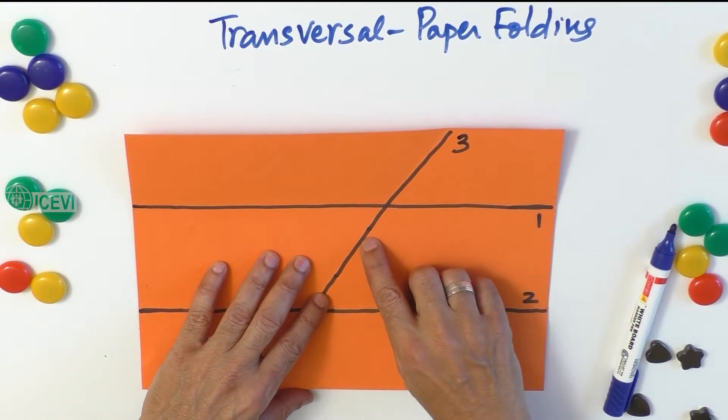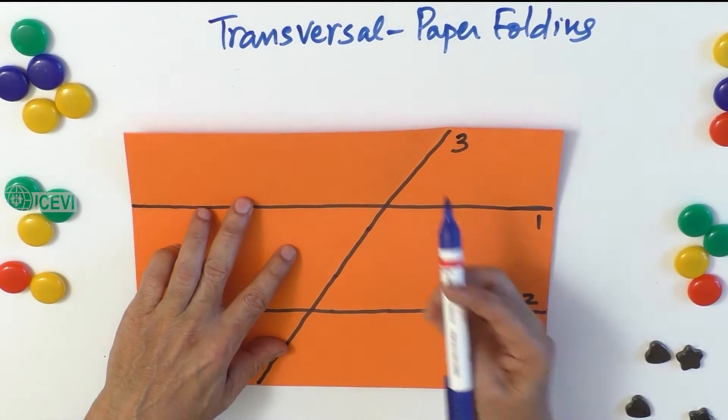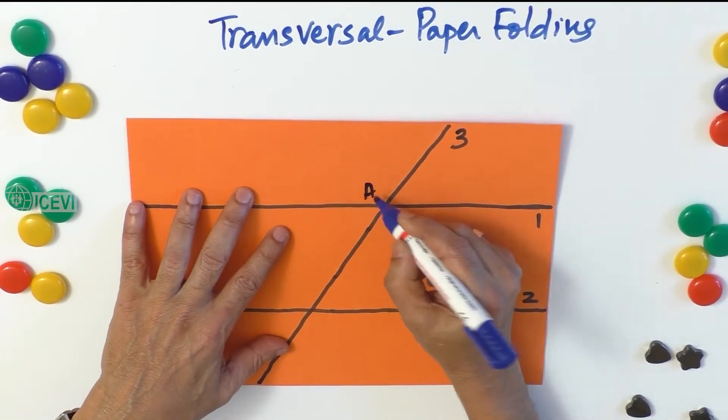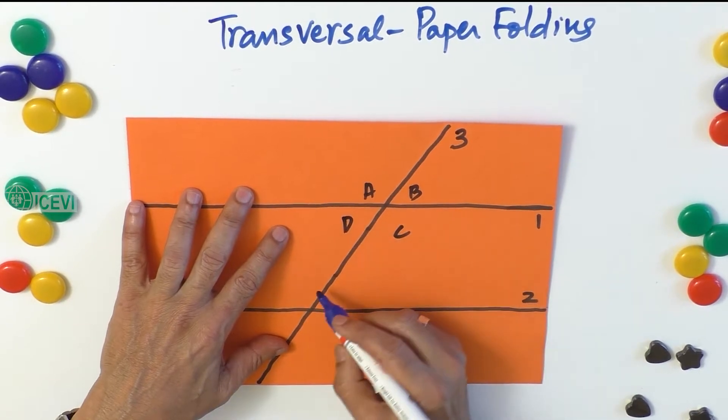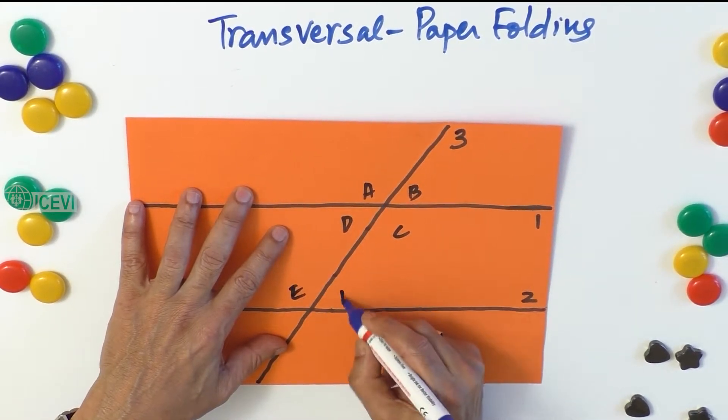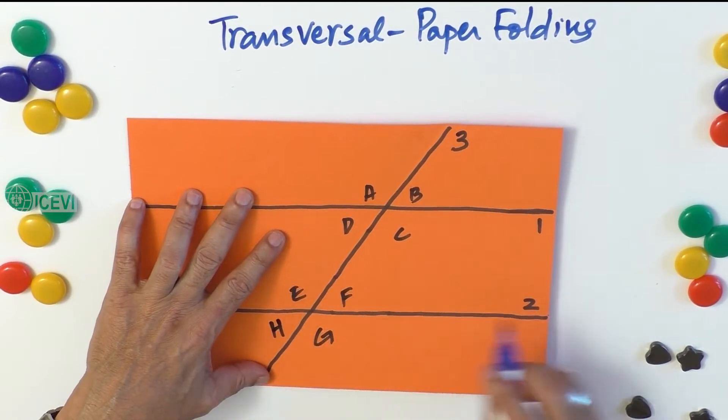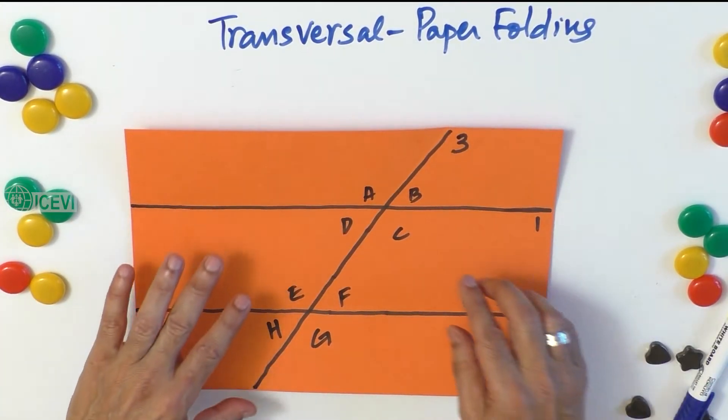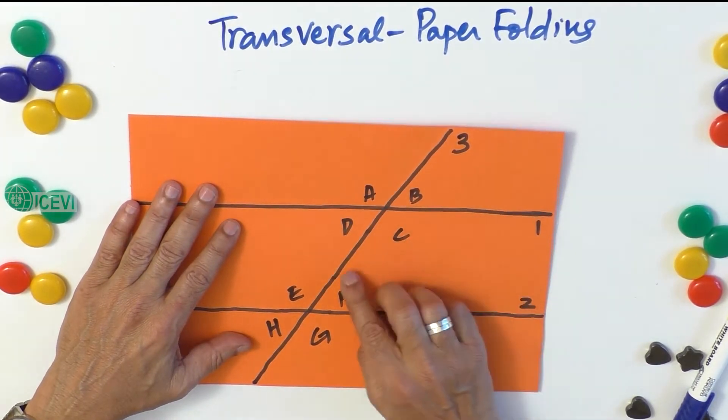Now using these, if we define angle A, angle B, angle C, angle D, angle E, angle F, angle G, and angle H. Now using the same principle, we can prove that angle B and angle F, which are the corresponding angles, are equal.